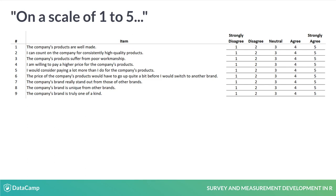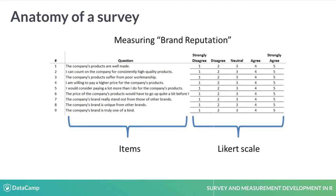In this first lesson, we'll sketch out the survey development process along with introducing key terms that we use throughout the course. The purpose of this survey is to measure brand reputation. The survey consists of nine items, which respondents rate on a scale of one to five. More formally, this is known as a Likert scale. Likert scales don't have to be five point, but that's the most common.